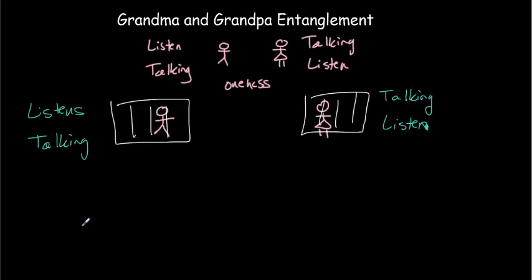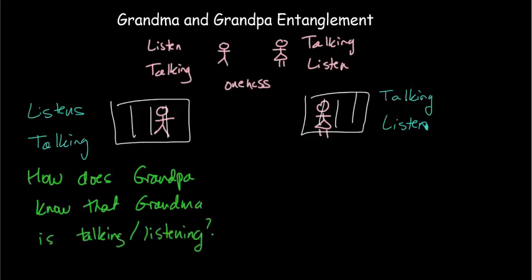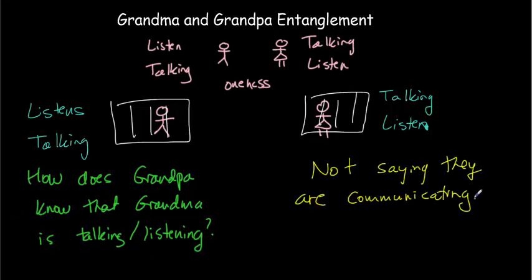And of course, that raises a big question, which is basically how does grandpa know that grandma is talking or listening? Now, in this analogy, we're not saying they are communicating. So we're not saying that grandma is talking to grandpa and he's listening and he's understanding what's going on. We're just saying whenever grandma starts talking, grandpa starts listening, puts his hand to his ear. So that basic question is, how could that oneness that they had when they were together remain when they're separated apart?